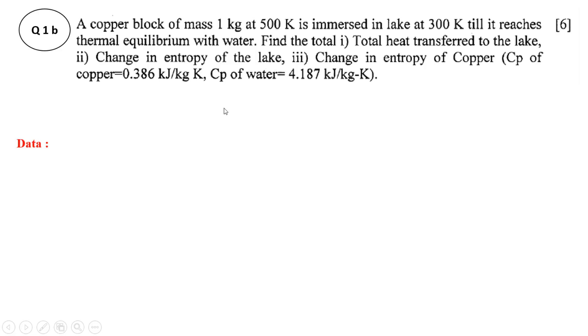So mass of the block is given as 1 kg, Cp of copper is given as 0.386 kJ/kg·K, then temperature T1 of the copper block is 500 Kelvin, that of lake in which it is immersed is 300 Kelvin, and Cp of water is given as 4.187 kJ/kg·K.